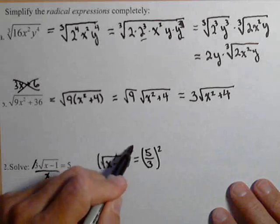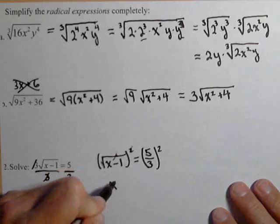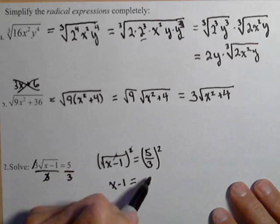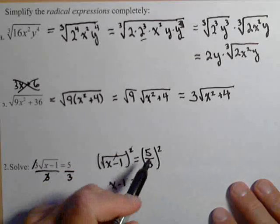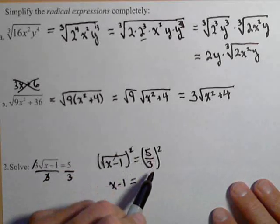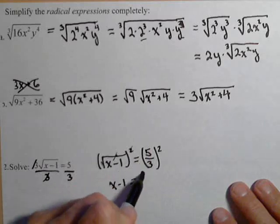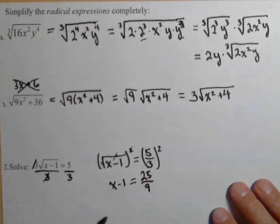So it's kind of like the radical and the square cancel each other out. And we get x minus 1 equals 5 thirds squared, which is 5 thirds times 5 thirds, or 5 squared over 3 squared. 5 squared is 25, 3 squared is 9.